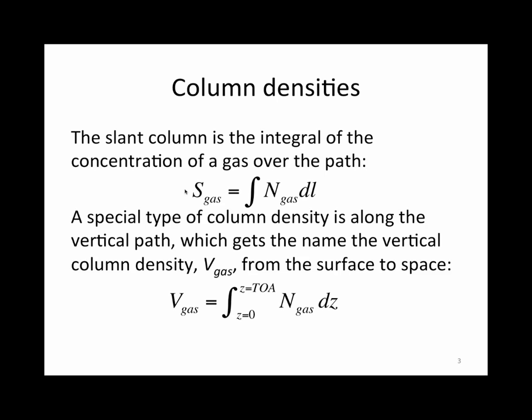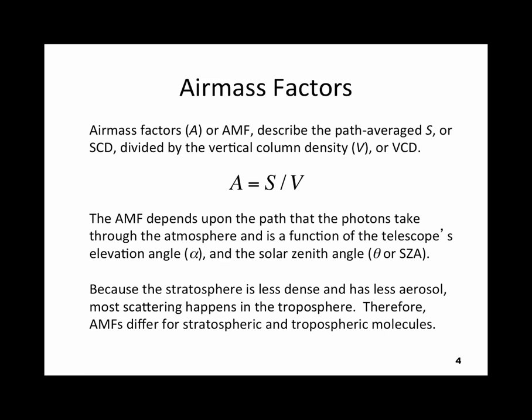A special type of column density is the vertical column density, where one looks straight up through the atmosphere all the way to the top, giving the vertical column density V of a gas. The vertical column density is the integral from the surface to the top of the atmosphere of the vertical profile — the number density varying with altitude, integrated over height. The ratio between the slant column S and the vertical column V is called the air mass factor.